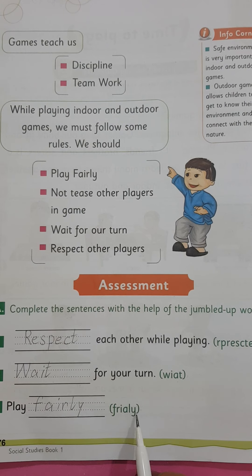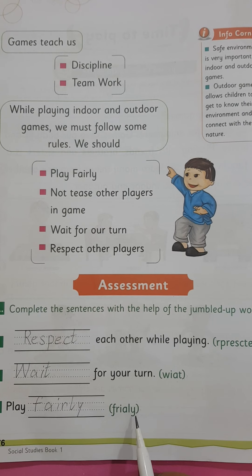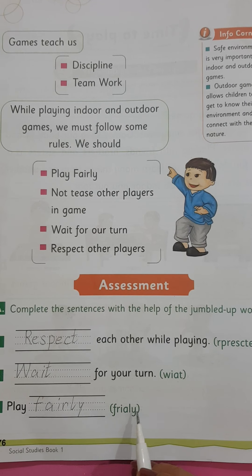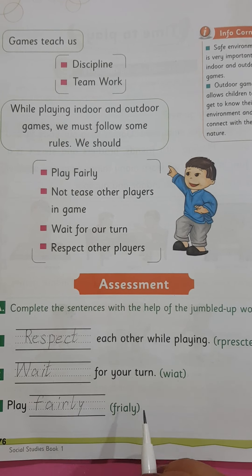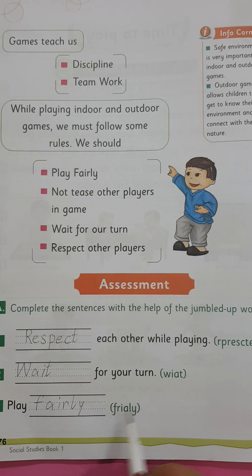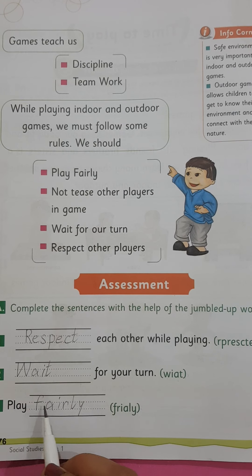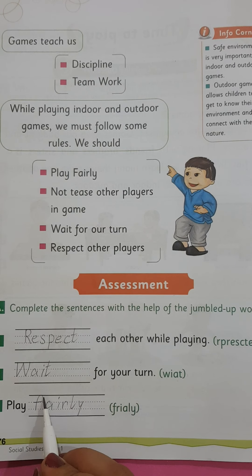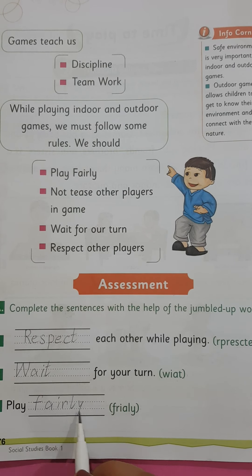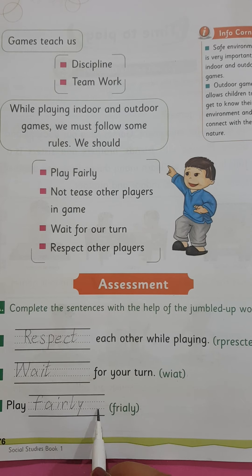The next one is: play dash. The jumbled letters given are f, r, i, a, l, y — which is wrong order. We will correct them and write: F-A-I-R-L-Y — 'fairly.' So the complete sentence is: play fairly.